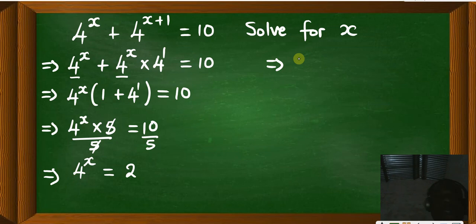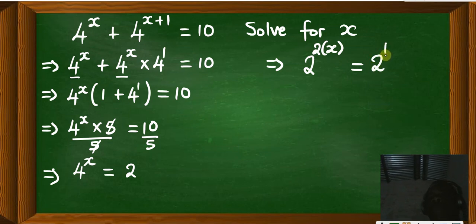4 to the power x can be written in index form as 2 to the power 2 times x, then is equal to, then you have also 2 in index form, 2 to the power 1. Now since the bases are equal, it means also the powers are equal.